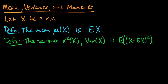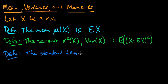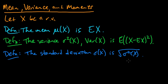The standard deviation follows naturally from the variance. The standard deviation of x, which we often denote by sigma of x, is the square root of the variance. And since the square root might be negative, we always take the standard deviation to be the positive square root.